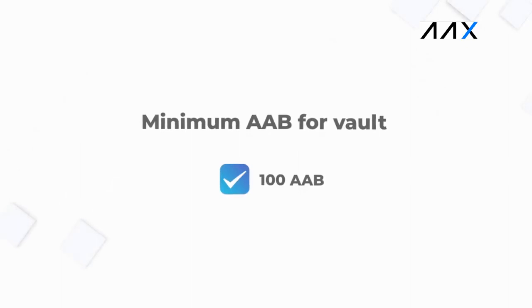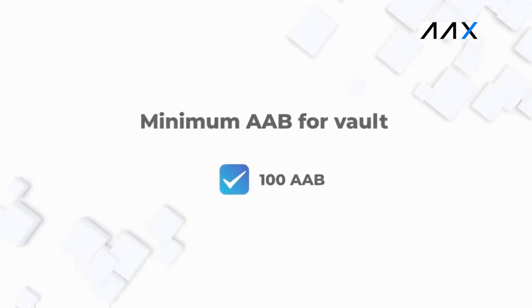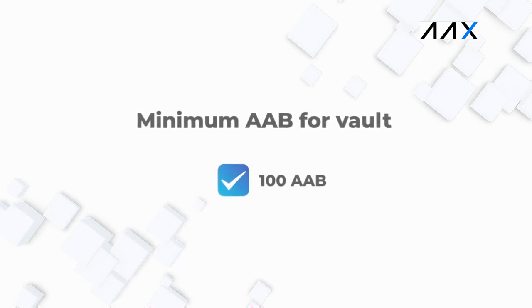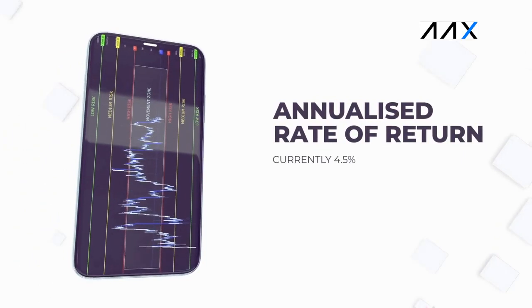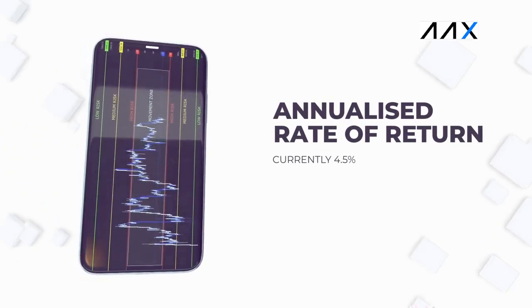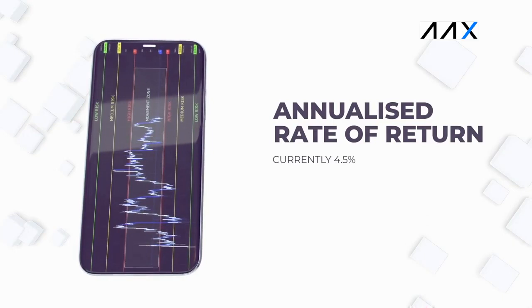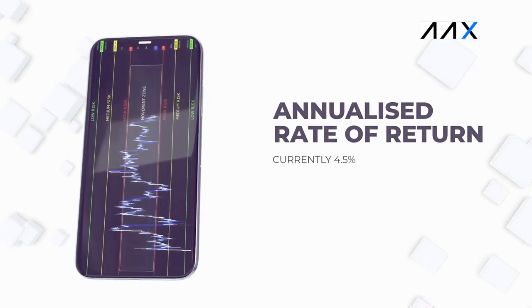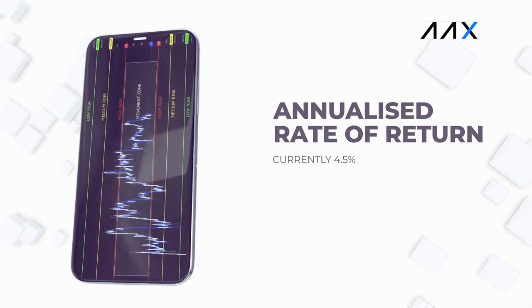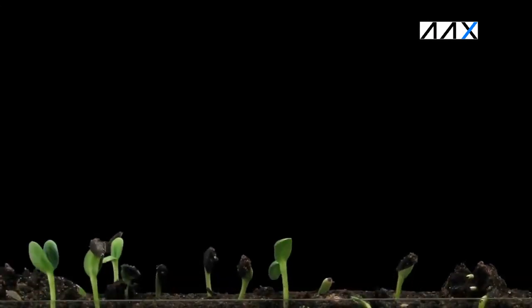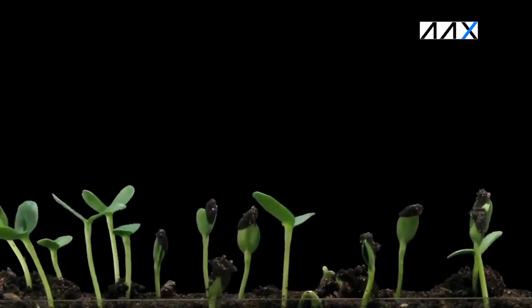When placing your AAB into the vault, you will require a minimum of 100 AAB, which at the moment is the equivalent of around US$19. Currently, you will receive an annualised rate of return of 4.5%. So if you have 1,000 AAB and place it into the AAX Vault with a return of 4.5%, after one year you would have gained 45 AAB. You then leave your AAB in the vault and watch it grow.